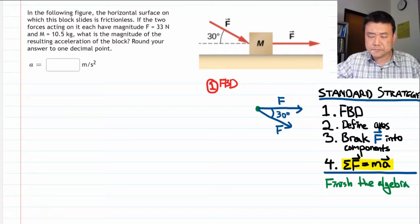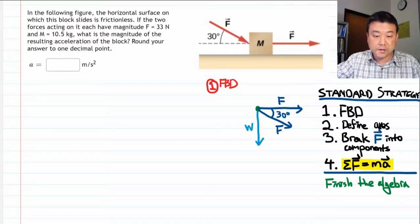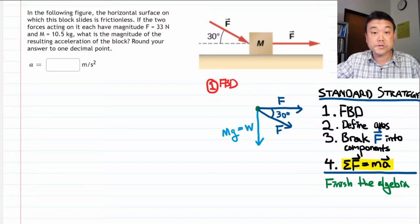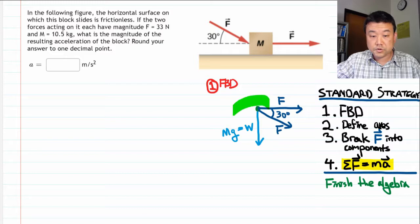And the problem doesn't explicitly give these other forces. And for this question, you can actually ignore them too. But let's draw them for the sake of illustrating the standard strategy. So on this block, there will be a gravitational force, which we'll call weight.